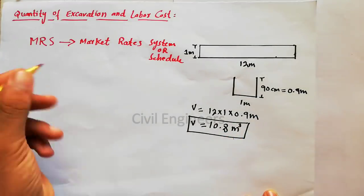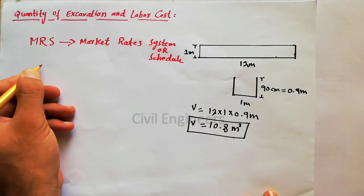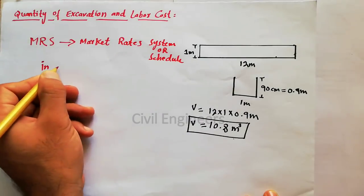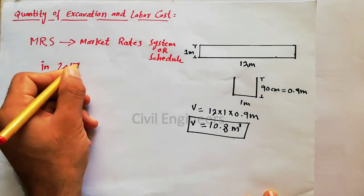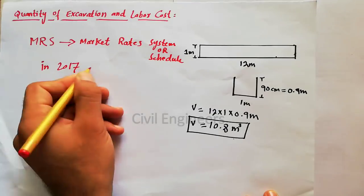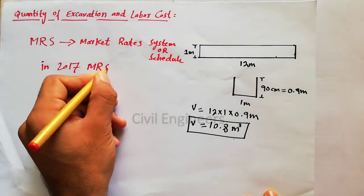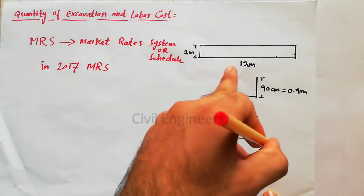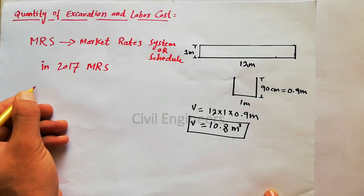Labor cost for 10.8 cubic meters we can find with the help of MRS. So in 2017 MRS, the cost of labor for excavation is for ordinary soil.